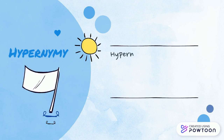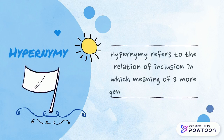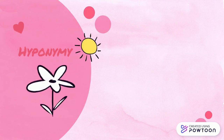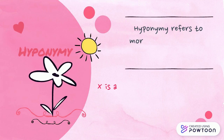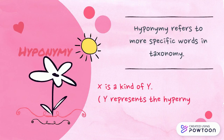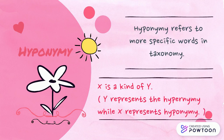The second pair is hypernymy and hyponymy. Hypernymy refers to the relation of inclusion in which meaning of a more general word in taxonomy, while hyponymy refers to more specific words in taxonomy. So, in 'x is a kind of y,' y represents the hypernym while x represents the hyponym.